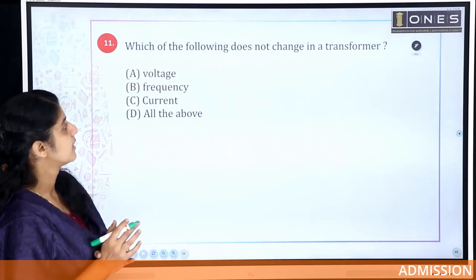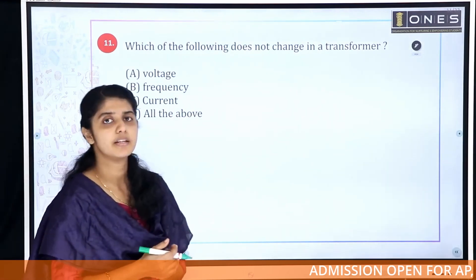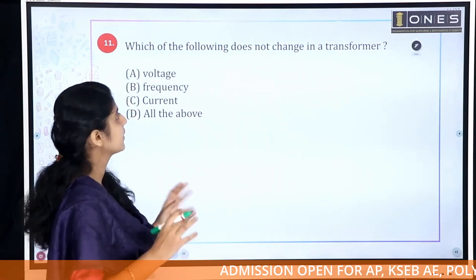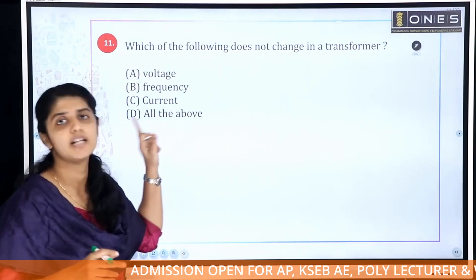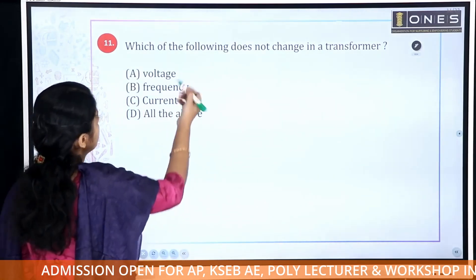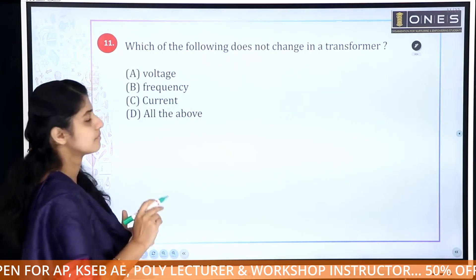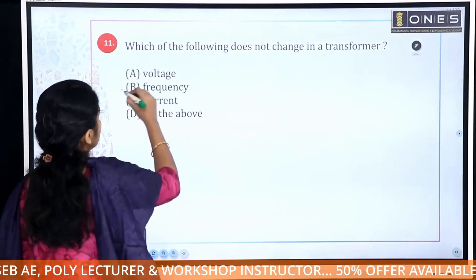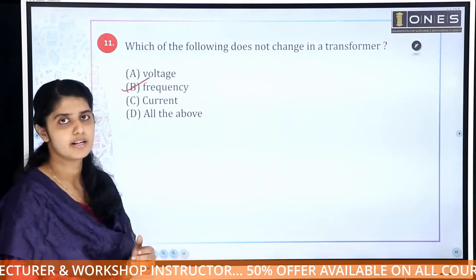Which of the following does not change in a transformer? The options are: Voltage, Frequency, Current, and All of the above. The answer is Option B — Frequency.